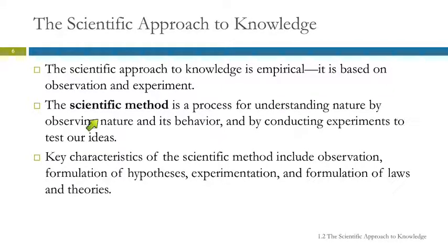What we call the scientific method is a process. We observe nature and how it behaves and then we do experiments to test those ideas. The main characteristics of the scientific method are observation, formulation of hypotheses, experimentation, and finally the formulation of laws and theories. We'll talk about each of those individually.